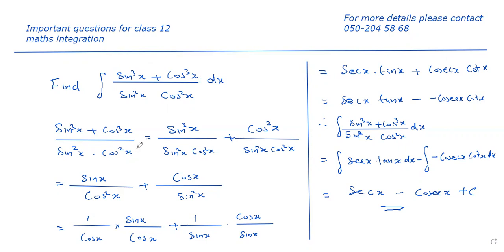For this, we can separate the denominator for the two terms in the numerator separately. So we get sin³x divided by sin²x · cos²x, plus cos³x divided by sin²x · cos²x.